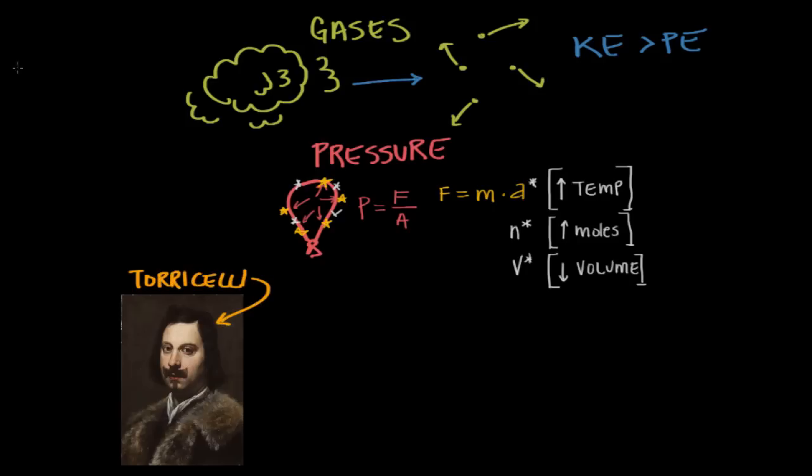And he solved the problem by inventing the Torricellian barometer. And a barometer is a device that measures pressure. And so he took a glass tube, and he filled it up with mercury.